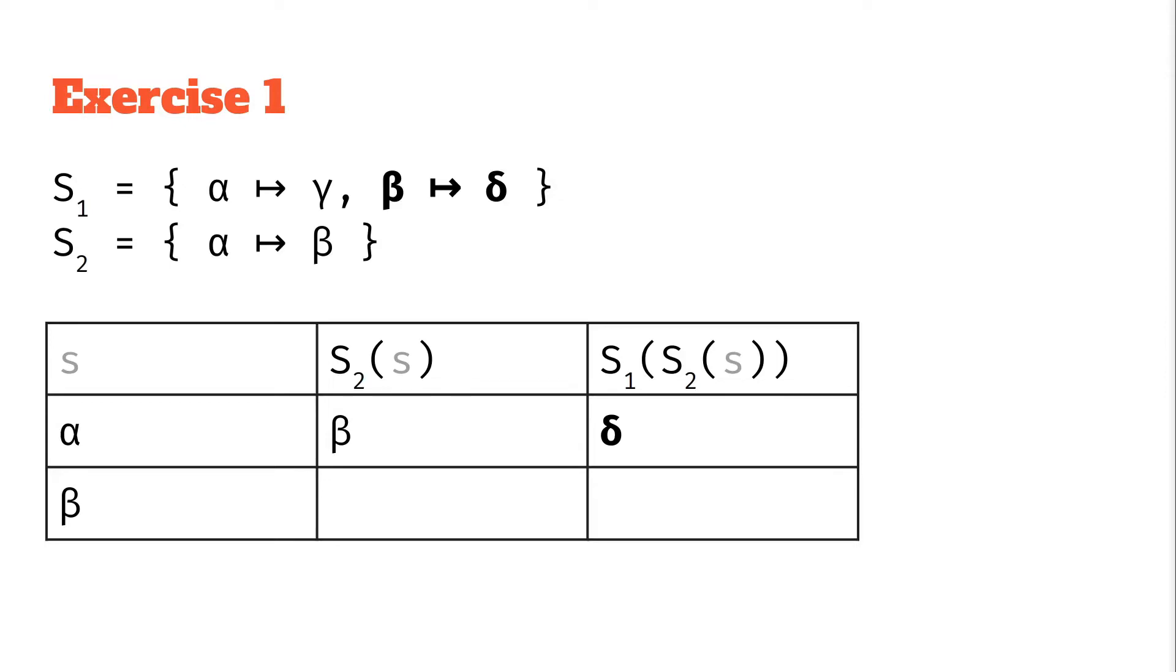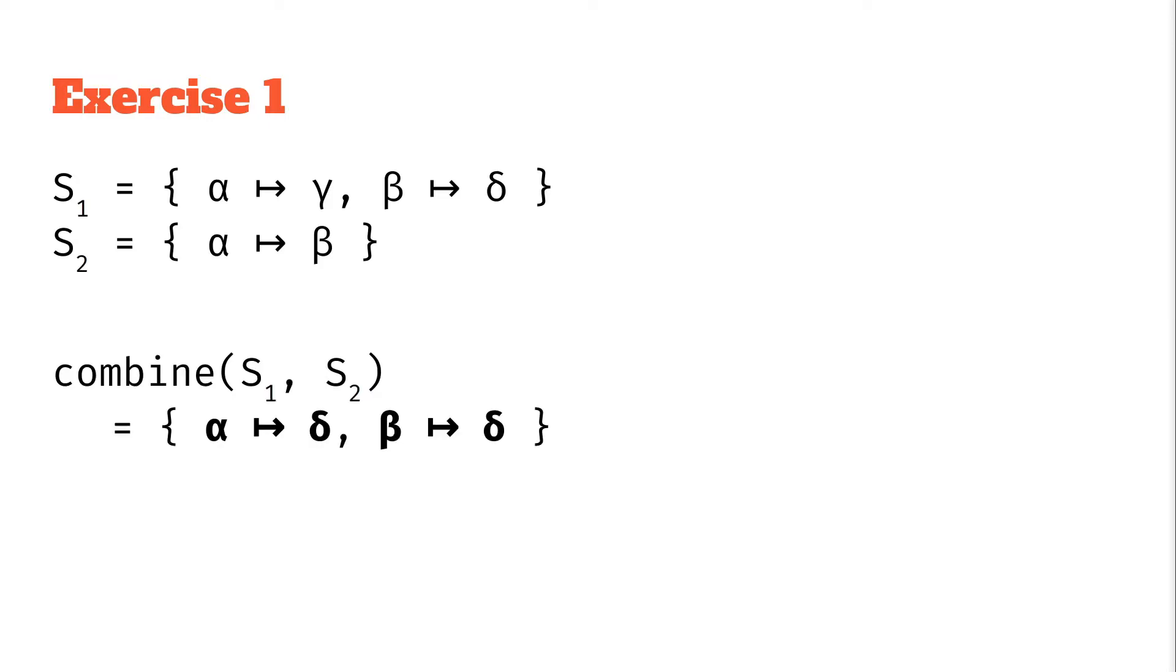Let's look at the second row now. We have this beta. In s2 actually the beta isn't mapped to anything. So nothing happens, it just becomes a beta again. And then we apply s1. And again we've got this mapping beta to delta and we can apply that and we get a delta. We can look at these mappings. When we apply s2 and then s1, that's taking alpha to delta and beta to delta. So that's really equivalent to these mappings alpha to delta and beta to delta. That's exactly what the combined substitution is.